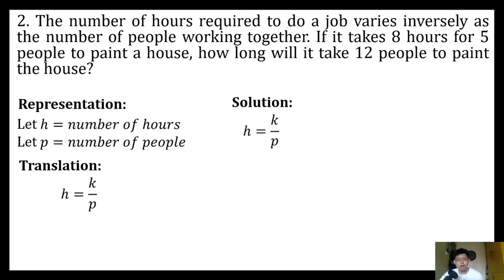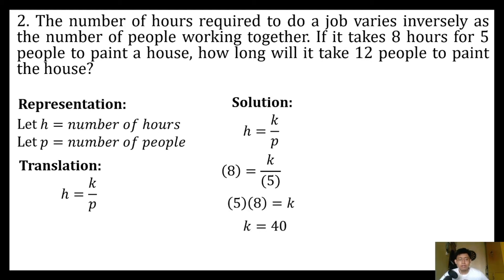Using the first pair of h and p — eight hours and five people — we substitute into our equation: eight is equal to k over five. Multiplying both sides by five to get the constant of variation, we get k is equal to 40.